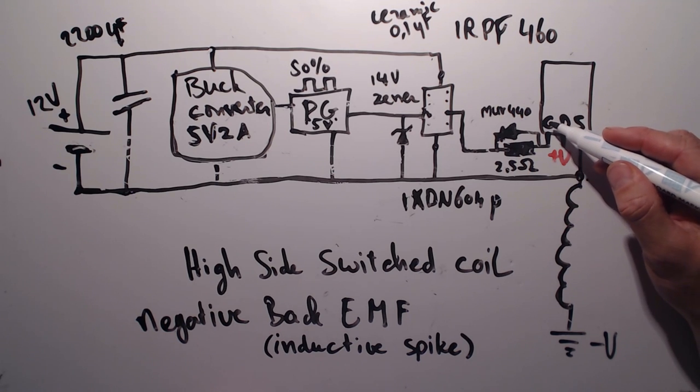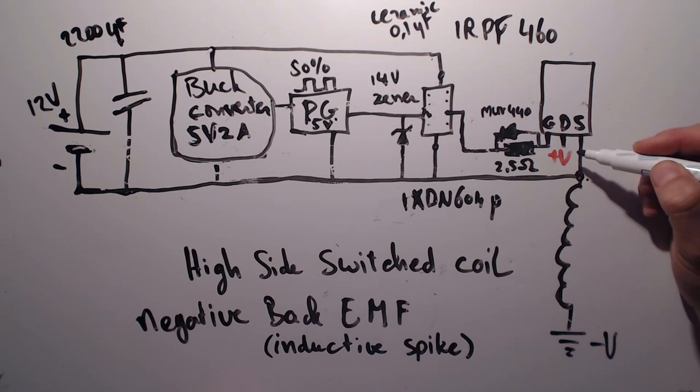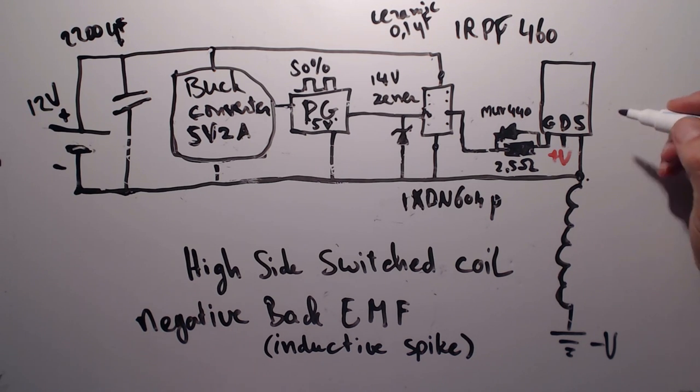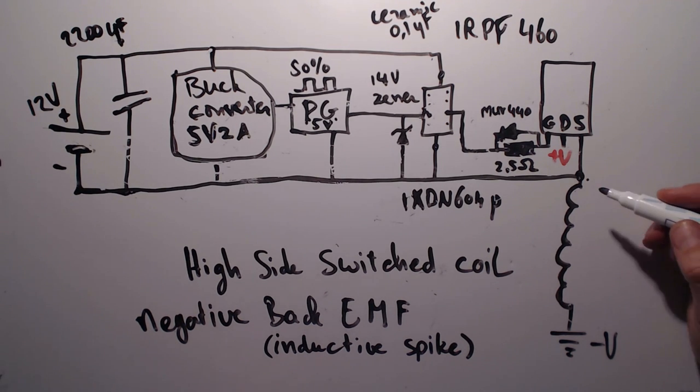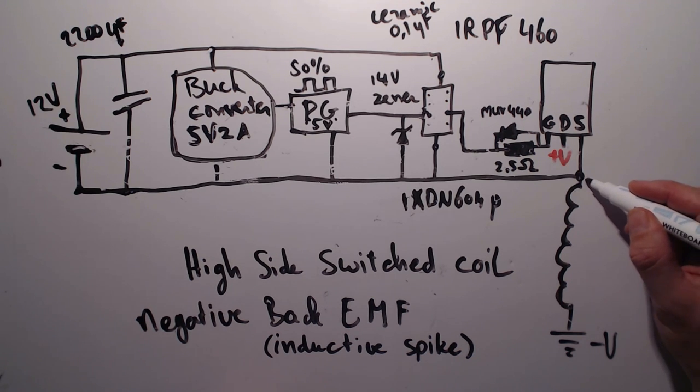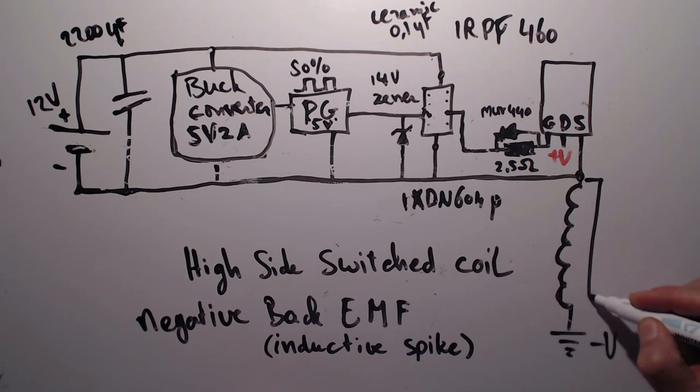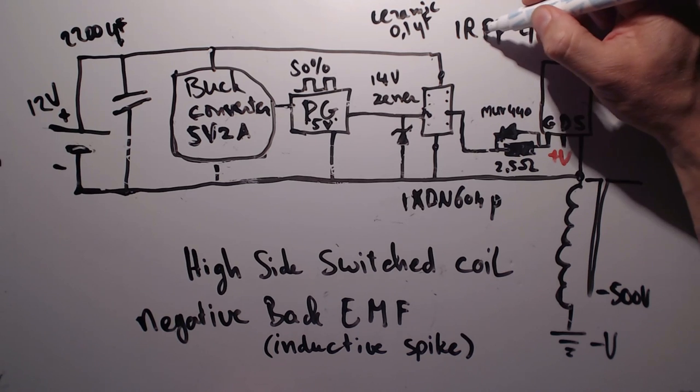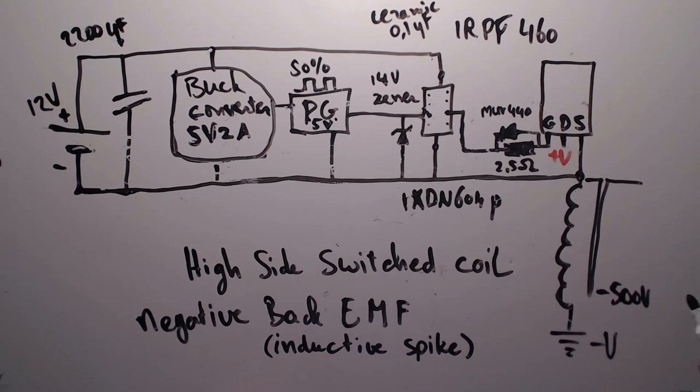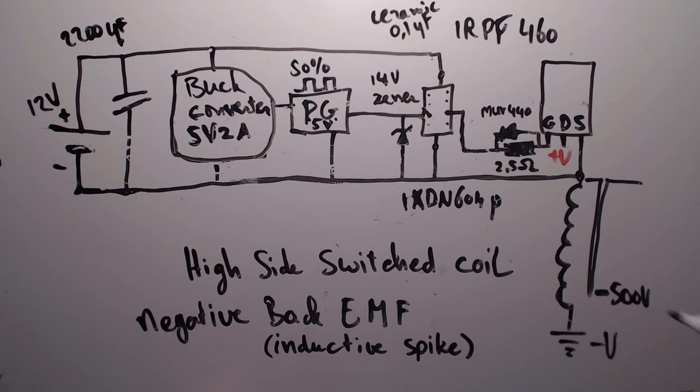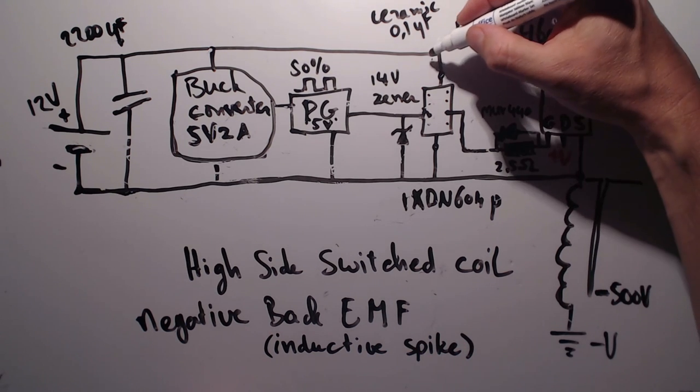And once that gate is going low again, relative to the source, the switch is opened really fast. When the switch is opened really fast, there is a negative back EMF produced. And that can easily reach minus 500 volts, which is the limit of this MOSFET, the IRPF460. We want this impulse. We will make use of it. And I will show you in future videos what we can do with it. That's it for now.